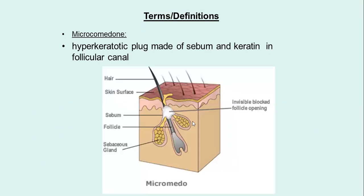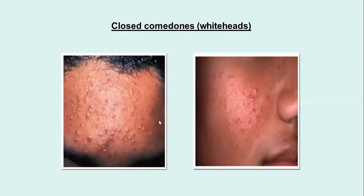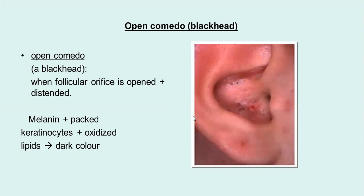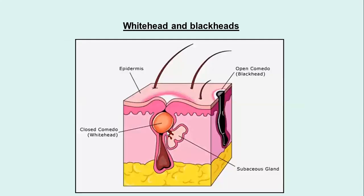There is blocking of the follicular canal. Closed comedone — you can see very clearly the whitehead, due to accumulation of sebum. Again the same whitehead, closed comedones. These are the blackheads — very clear, very resistant to treatment. Closed comedone whitehead: when it comes onto the surface, exposure and oxygen oxidation cause melanin pigmentation — blackhead.